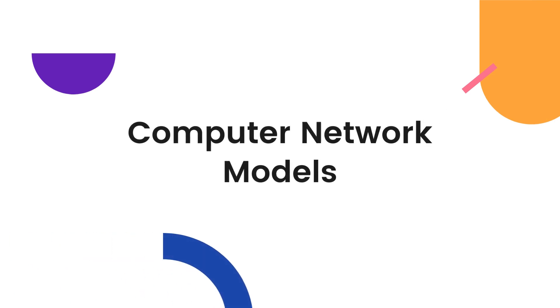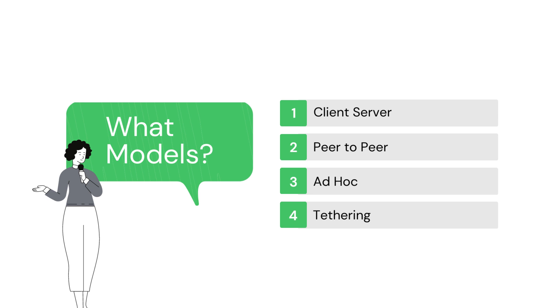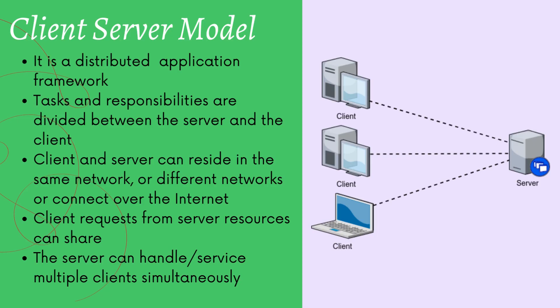We now move on to the different computer network models. We will learn four: the client-server model, the peer-to-peer model, the ad hoc model, and tethering. The client-server model is a distributed application framework — rather than software running on a single computer, different parts of the software run on two or more devices. The tasks and responsibilities are divided between the server and the client.